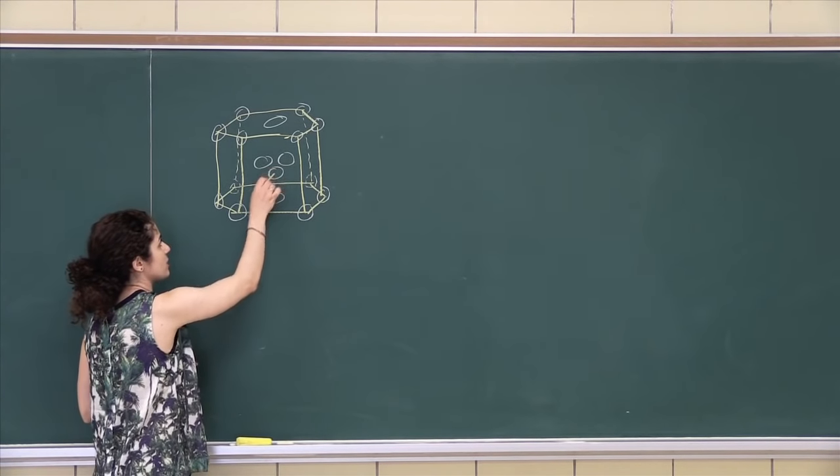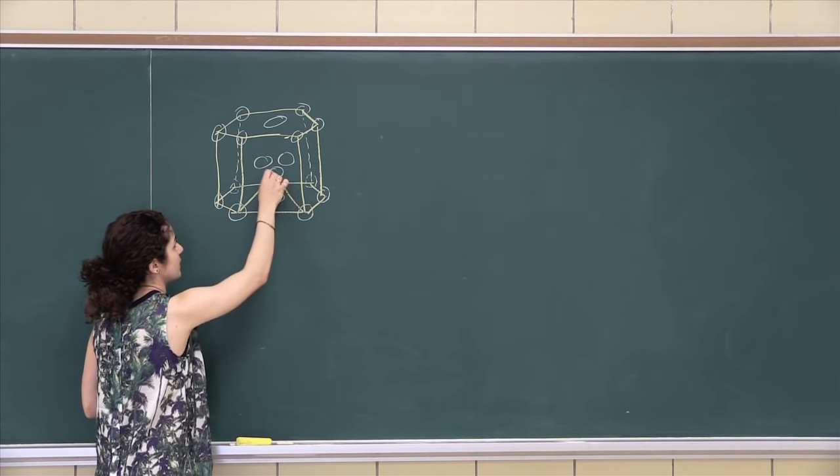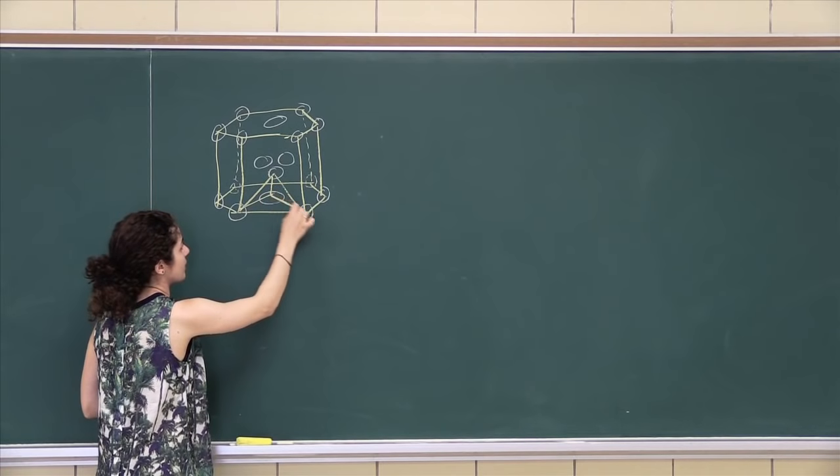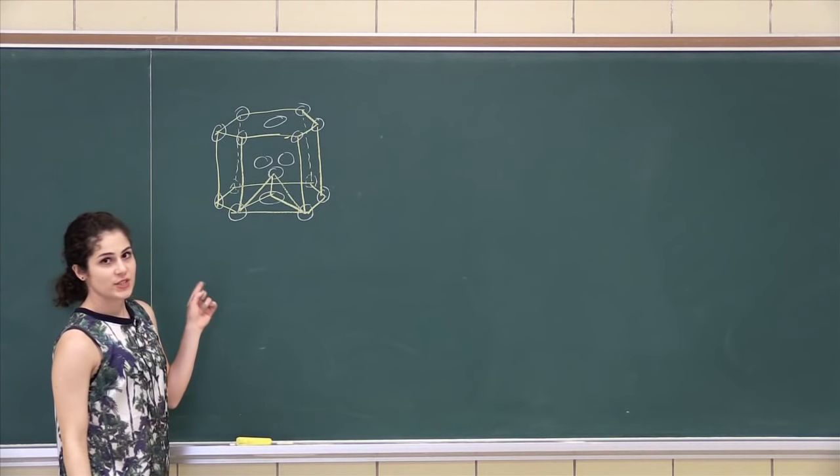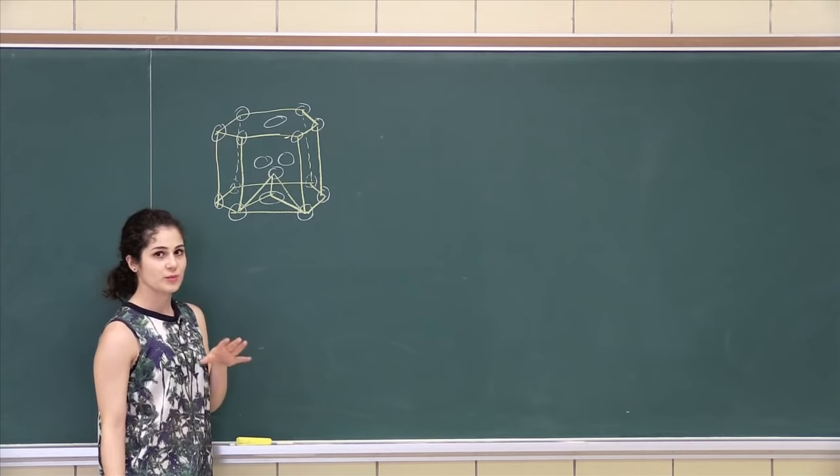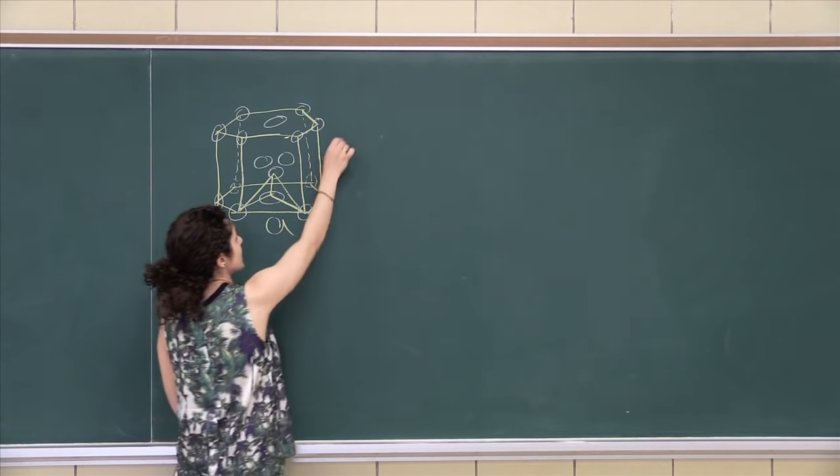And that's because it forms a tetrahedral site right here. I'm gonna draw this tetrahedral site bigger because that's what's gonna help us find the A to C ratio.